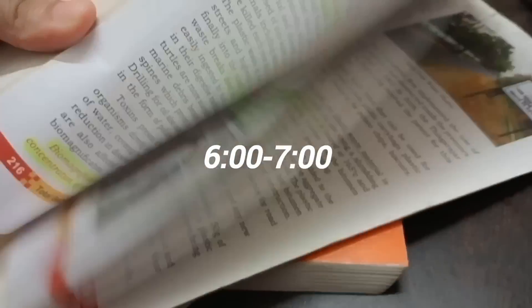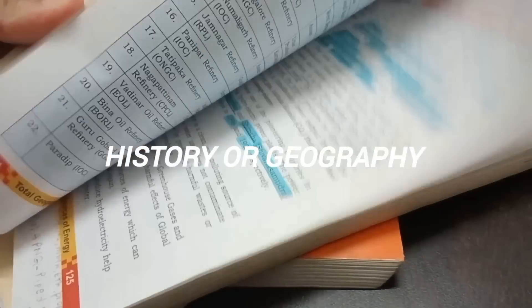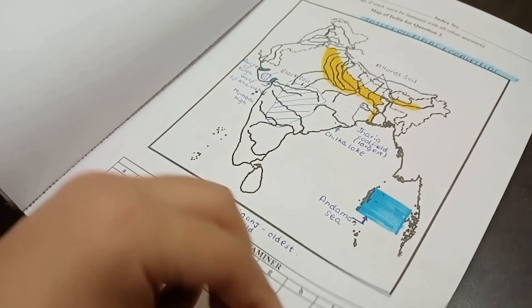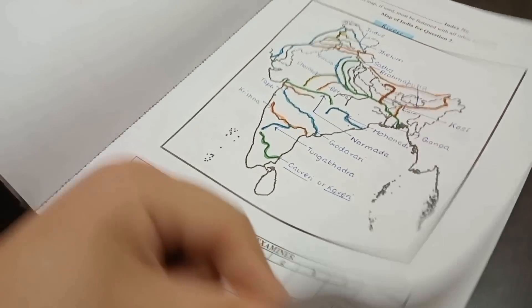After half an hour break, you have to start up with history or geography and it should be done on alternative days. Make a habit of writing subheadings along with the headings in your history and civics answers.